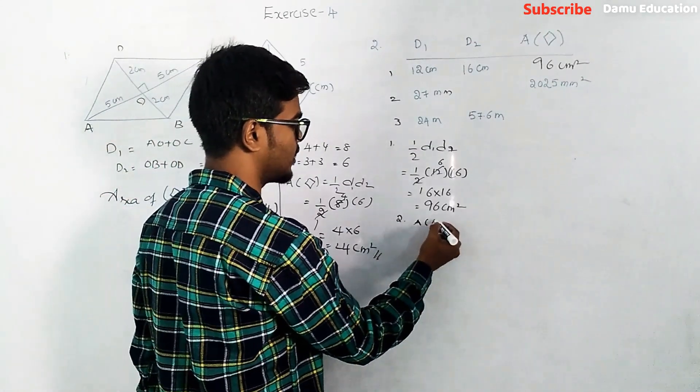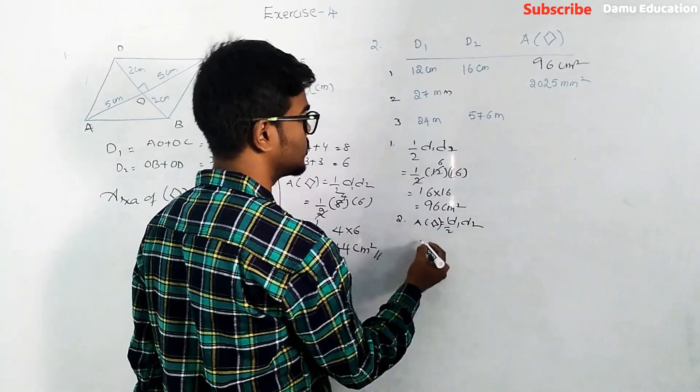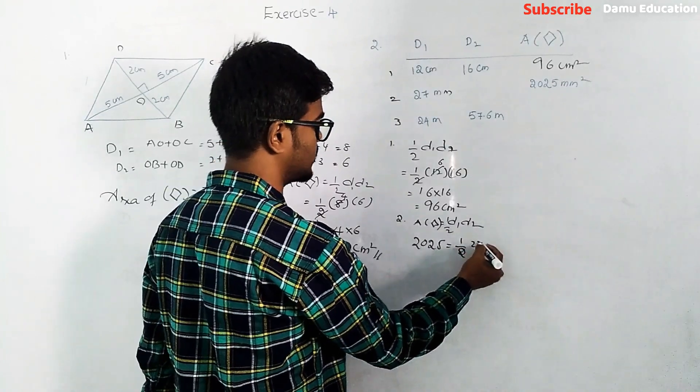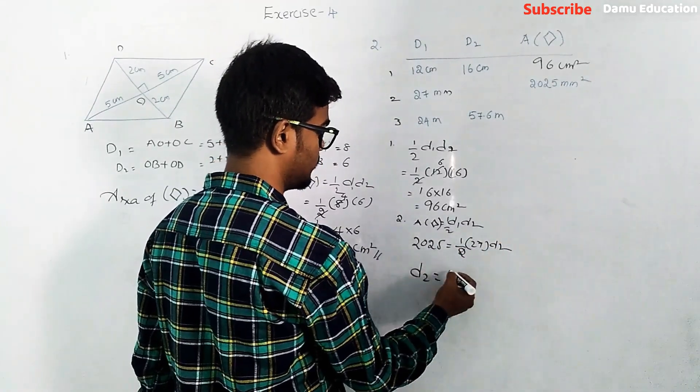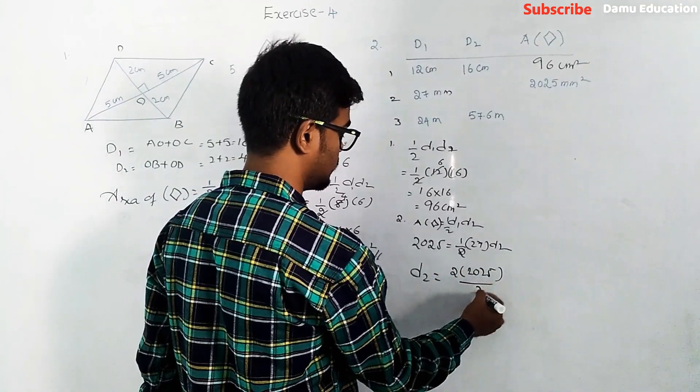Area of rhombus will be equal to half into d1 times d2. So area of rhombus 2025 equals half into d1 which is 27 times d2. So d2 will be 2 into 2025 divided by 27.